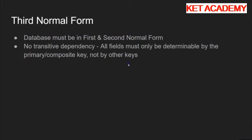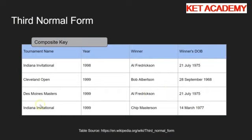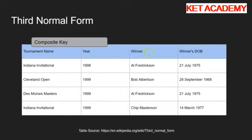Let me show you a simple example. Here we've got a list of tournaments pulled from Wikipedia. There's the tournament name, the year the tournament was in, the winner of the tournament, and the winner's date of birth. This works through first and second normal form. But there is a problem: you can determine one of these fields by looking at another non-key field. You can tell what the winner's date of birth is by looking at the winner's name. You can't tell the winner's date of birth from the tournament name or the year, but you can determine it from the winner's name - and that's no good.